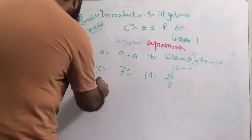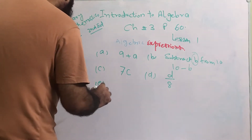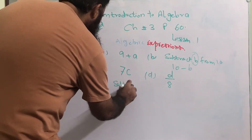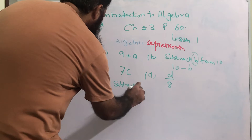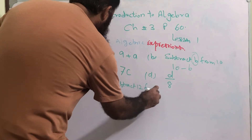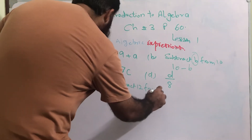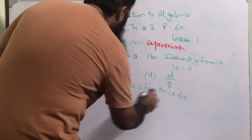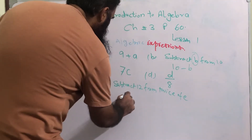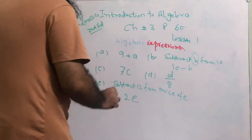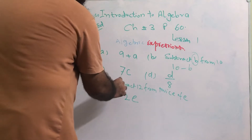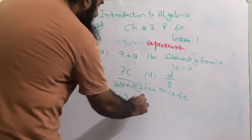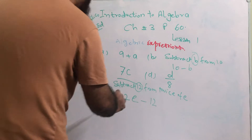Part e is: subtract 12 from twice of e. What is twice of e? It is 2e. So we need to subtract 12 — 12 will get the negative sign — so 2e minus 12 will be the answer.